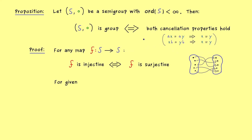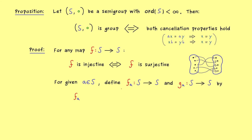Now we can work with two maps that capture the idea of the cancellation property. For a given a, we write a times x as a map — let's call it f_a. Similarly, I also want to have a map g_a. Both are defined from S to S, with input x in the domain. f_a of x is given as a times x, so the binary operation is now given as the map f_a. And in exactly the same way it is given as g_a, but there a comes from the right-hand side.